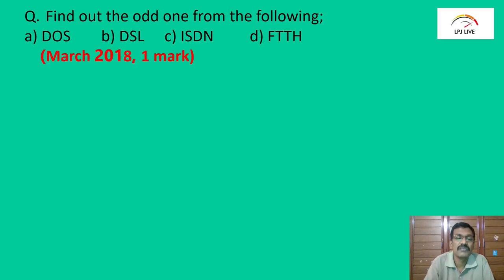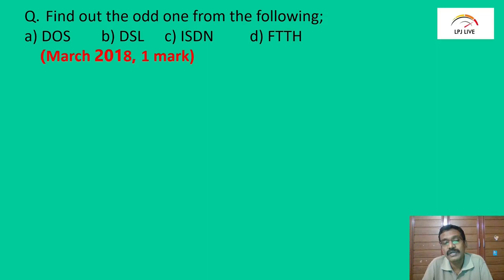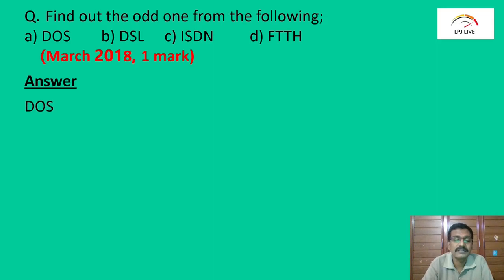Find out the odd one from the following: DOS, DSL, ISDN, and FTTH. The answer is DOS, because DOS is an operating system, while DSL, ISDN, and FTTH are all internet connectivity types.